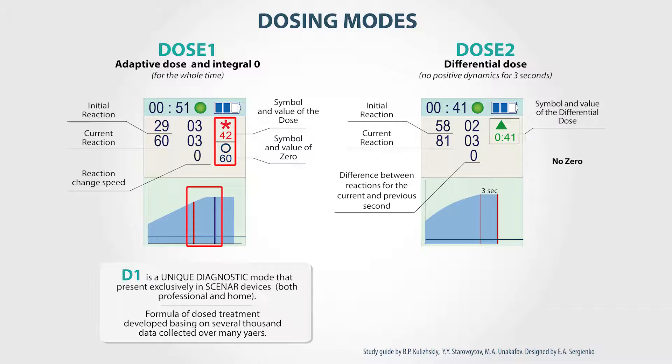These are indicators of dose and zero. The dose indication means that according to our criteria, during the treatment time, the reaction changed sufficiently enough to cause the body's response. The dose is indicated by the red asterisk symbol, and the value below it indicates the value of reaction at the moment when the dose was reached.